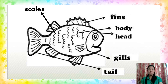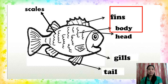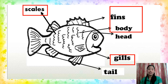How about the body parts of a fish? It has scales, fins, body, head, gills, and tail. The fish has fins and a streamlined body for swimming. It also has gills for breathing, and scales that cover its body and protect it from injury.